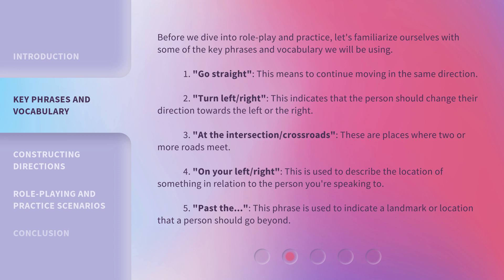Third: At the intersection or crossroads — these are places where two or more roads meet. Fourth: On your left or right — this is used to describe the location of something in relation to the person you're speaking to. Fifth: Past the... — this phrase is used to indicate a landmark or location that a person should go beyond.